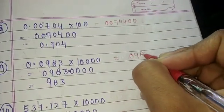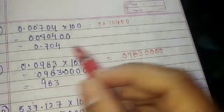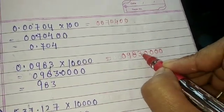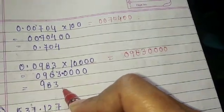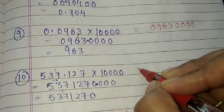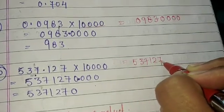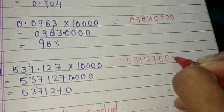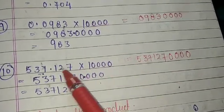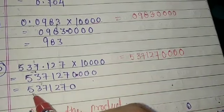Next: 0.0983 into 10000. Forget the point and write 0983. Then add zeros. Count digits: 1, 2, 3, 4 — four digits. Place the point 4 digits from the right. Answer: 0.10983. Then 0.15117 into 10000: forget the point, write 15117. Count digits: 1, 2, 3 — three digits before point. Answer is 5371270 — wait, place point at 3 digits. Final answer: 537.1270.